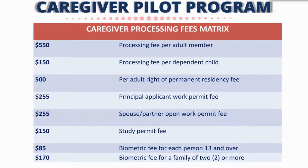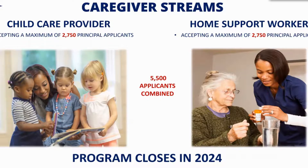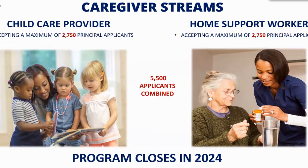The caregiver program has two streams: the child caregiver provider and the home support worker. They'll be accepting a maximum of 2,750 principal applicants per stream, for a total of 5,500 per year — not counting family members, just the principal applicant. This program is closing in 2024. Pilot programs can be extended and modified based on their success or need, so it may be put in place permanently or tweaked, but it makes sense to take advantage of it now.